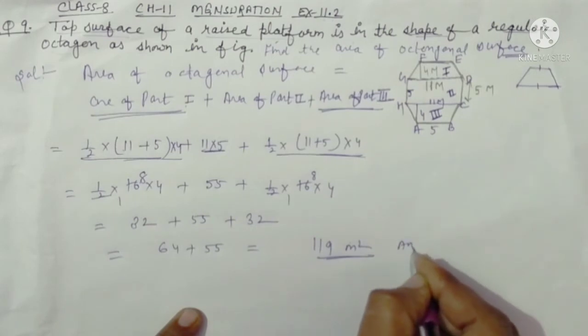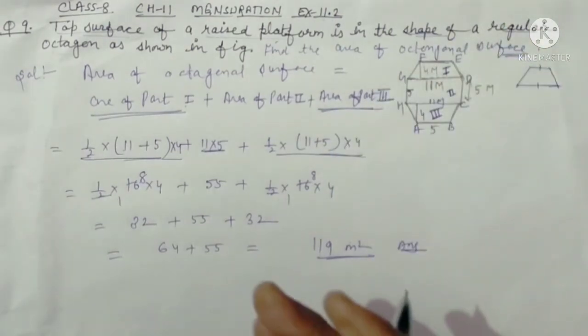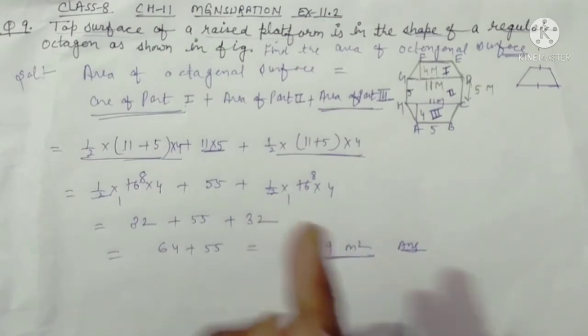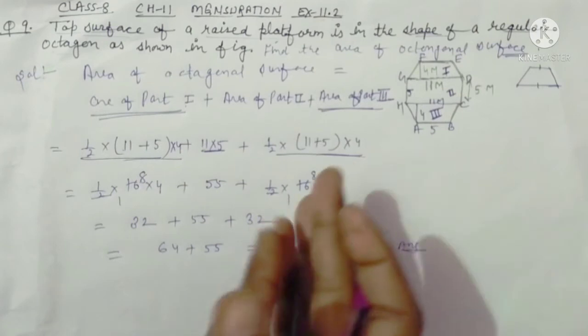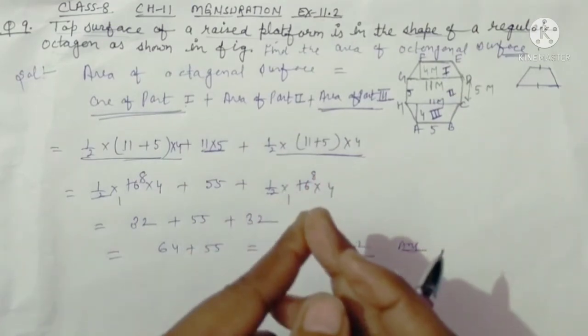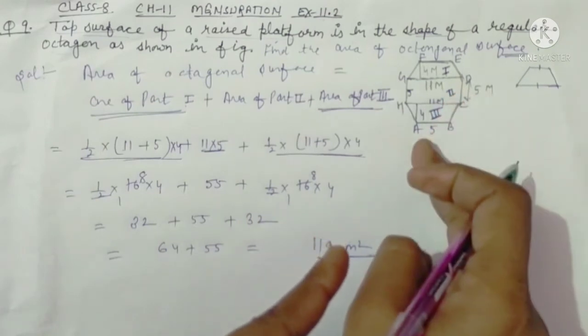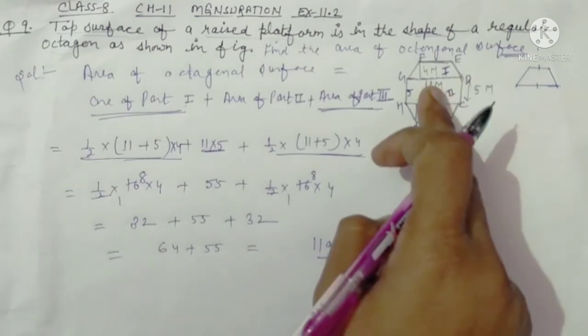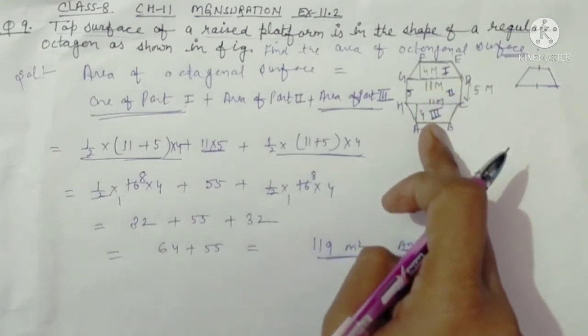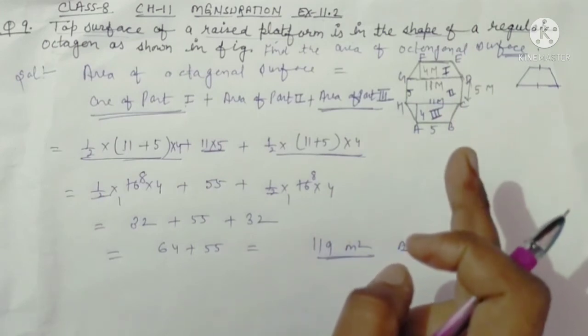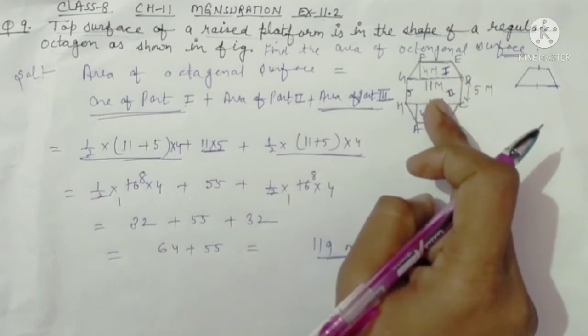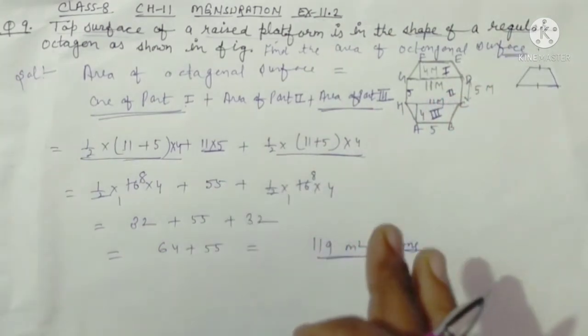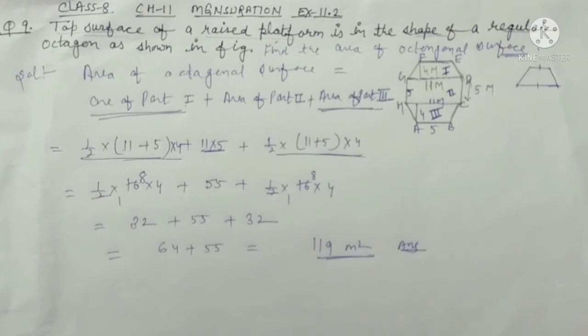This area is octagonal surface area. In this question we figure given this area 1, 2, 3. Area plus 1, 1, 1, 9. The first part and the third part is trapezium. Trapezium area: 1 by 2 into parallel distance between these. With these formulas we solve this question completely. If you liked the video, like and subscribe.